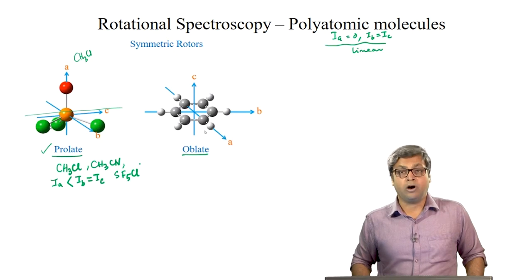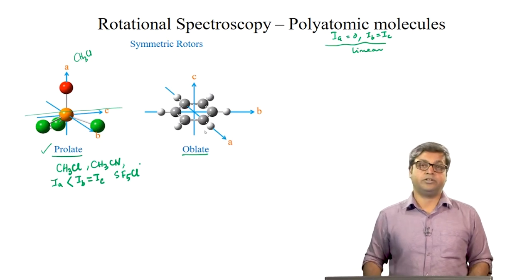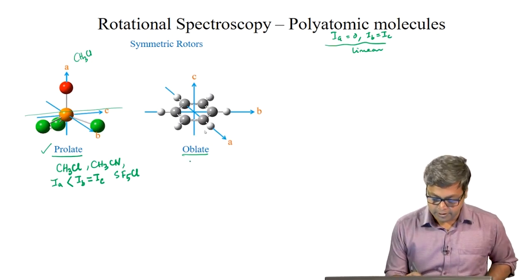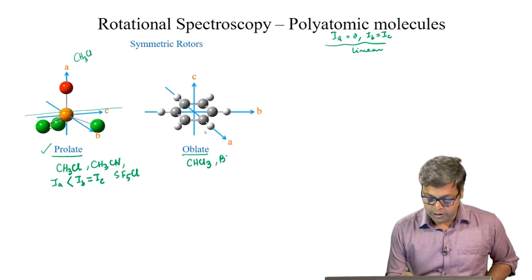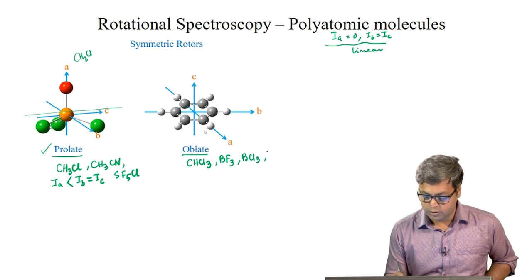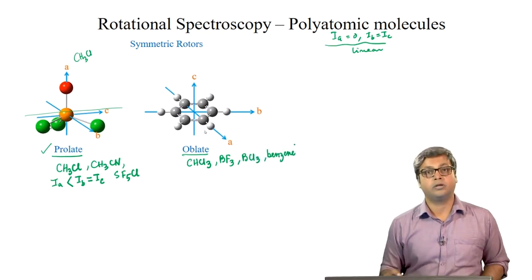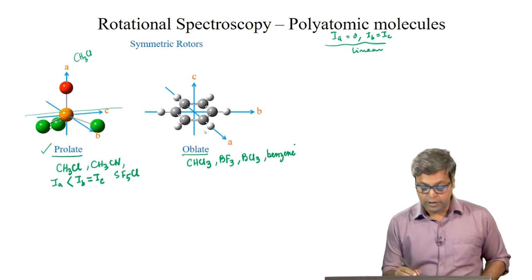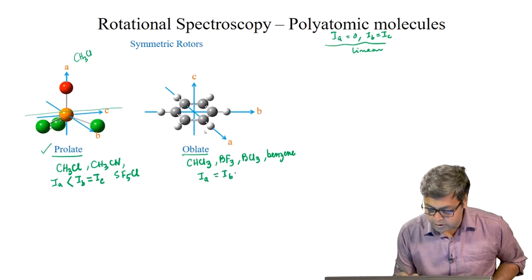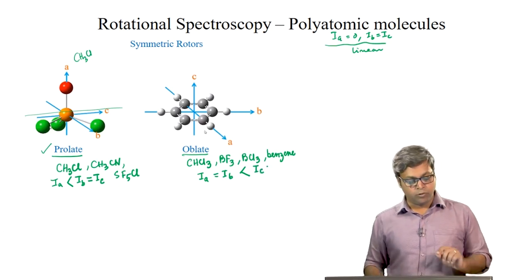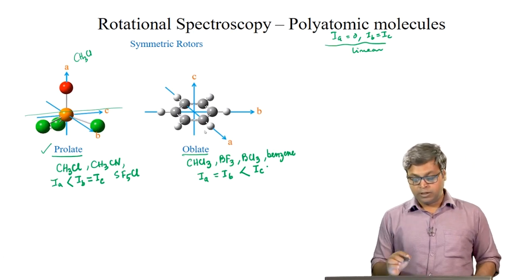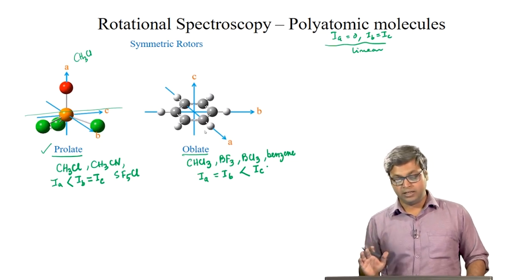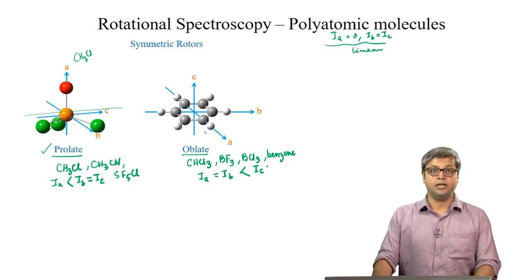The other kind of symmetric top is the oblate symmetric top. Examples of oblate tops include CHCl3 (chloroform), BF3, BCl3, and benzene. For oblate tops, IA = IB and IA and IB are less than IC. So in prolate we had IA < IB = IC, but in oblate the largest moment of inertia IC is unequal to the other two, IA and IB.